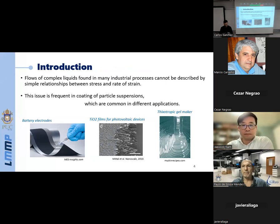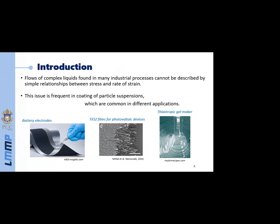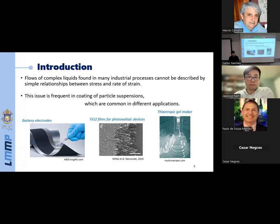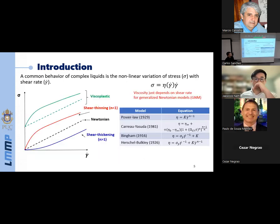There are many complex liquids in industry with important applications that cannot be described by simple relationships between stress and rate of strain. For example, some of these liquids are time-dependent — this is the case of particle suspensions. A particular application of this kind of liquid is the coating and processing of battery electrodes. The most common behavior of non-Newtonian liquids is the non-linear variation of stress with shear rate.